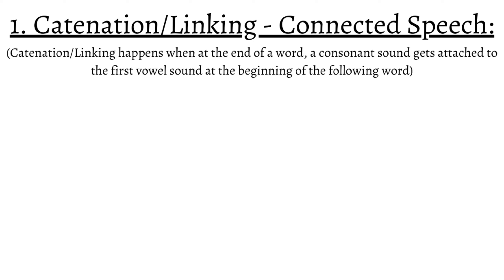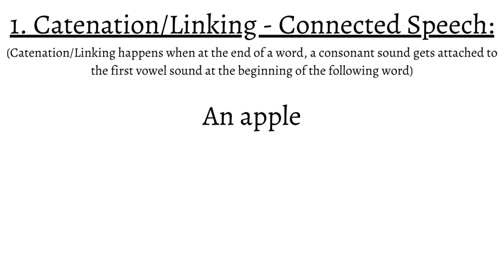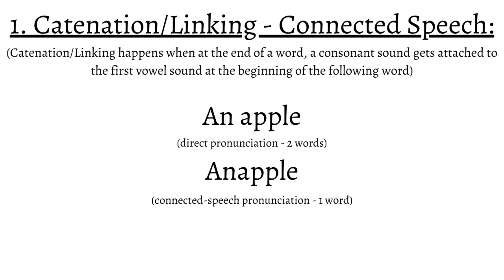Catenation, or linking, happens when at the end of a word, a consonant sound gets attached to the first vowel sound at the beginning of the following word. As a reminder, a vowel is a speech sound made without constricting the vocal tract, like a, e, i, o, u, and a consonant is a speech sound produced by constriction. An example of that is 'an apple.' This phrase has two words, and intentionally pronouncing it as two words, 'an apple,' is the direct pronunciation that many learners would say, but when native speakers say it, it's pronounced as one word.